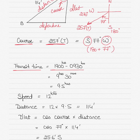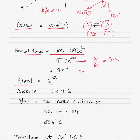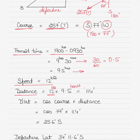The transit time is from 0930 to 1900, which is 9 hours 30 minutes, or 9.5 hours (since 30 divided by 60 equals 0.5). The speed is 12 knots, so the distance covered is 12 multiplied by 9.5, which equals 114 nautical miles.